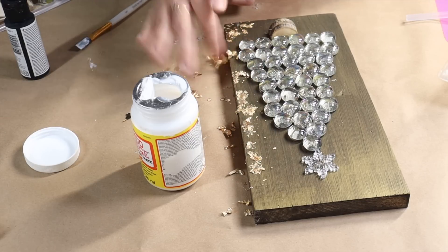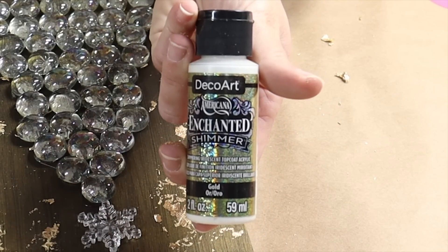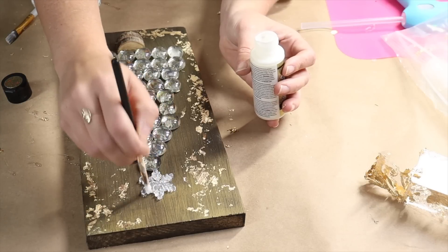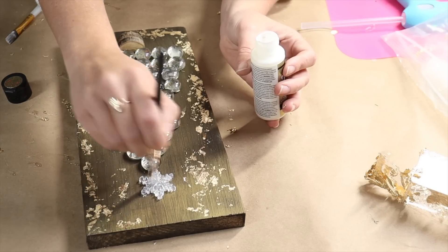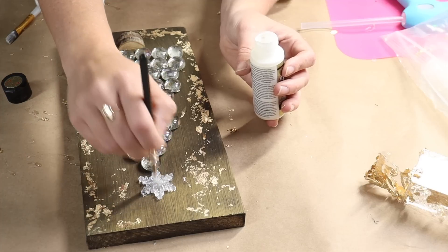So I let that set and then I brushed away the excess. Then to add just the icing on the cake, I came in with this shimmer from the Enchanted line as well from DecoArt. This is just a top coat that you can put on top of things just to give it that little shimmer and shine.